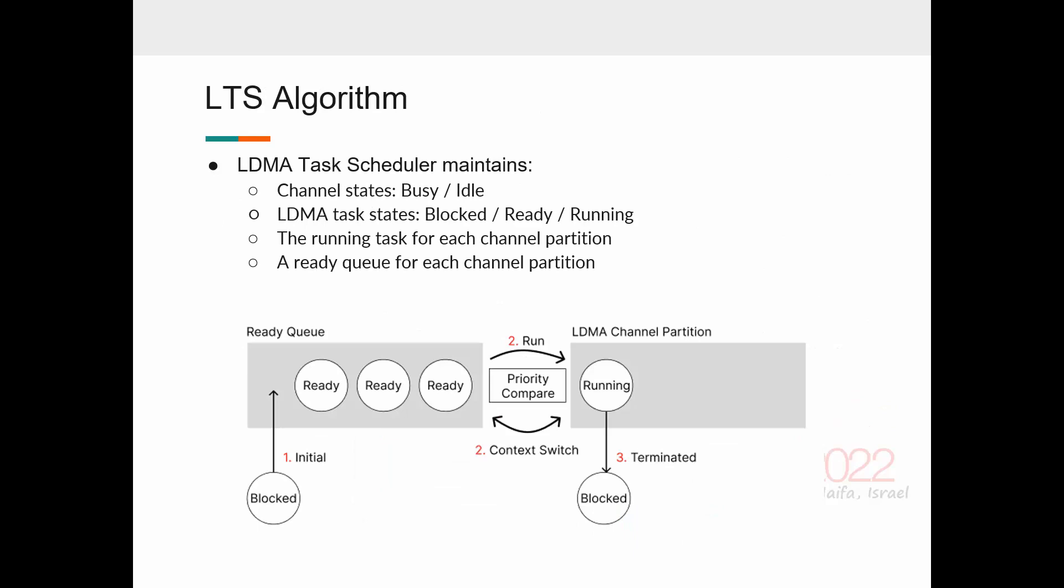LDMA task scheduler maintains channel states, which is busy if there's a task in the channel, or idle if there's no task in the channel. It also maintains the LDMA task states. This picture shows how LTS maintain the task states. When the task enters, the LTS puts the task into the ready queue, and changes its state blocked to ready. If there's no other LDMA task executing in the same channel partition, then this LDMA task starts immediately, and its state is changed to running. The context switch occurs if the coming task has higher priority than the running task. Upon termination, it changes the task state to blocked and starts the next task.